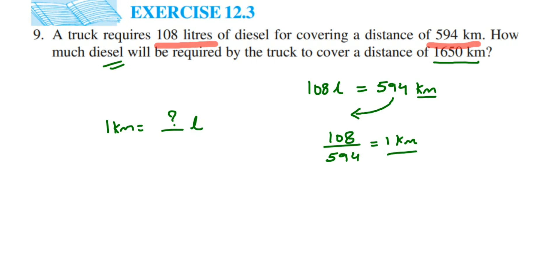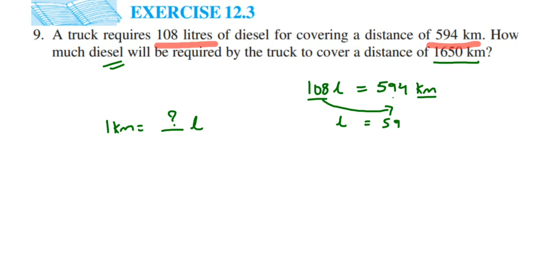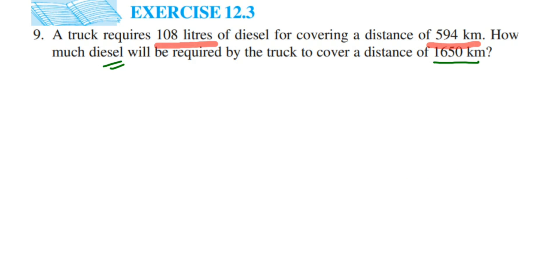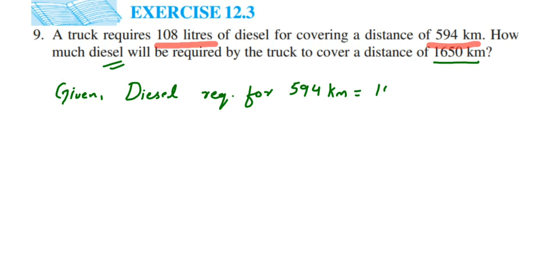Here I am finding out for 1 kilometre how many litres of petrol are required. If you want to find how much distance is covered in 1 litre, then you transpose the litre side, giving 594 divided by 108 — that tells you how much distance is covered per litre. We are using the unitary method here — first find for 1, then find for the rest. So: diesel required for 594 km is equal to 108 litres.